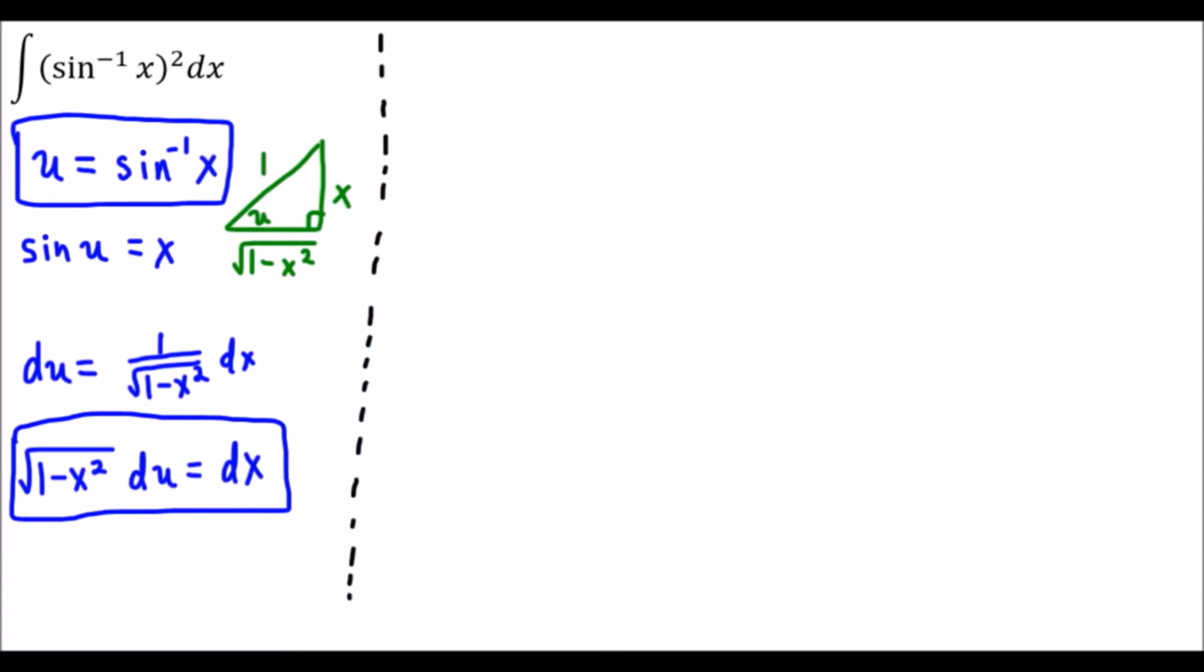We could rewrite this now as the integral of u squared and instead of dx we're going to replace dx with radical 1 minus x squared du. Now it may seem like we didn't accomplish anything here because our integral is still in terms of x. But we could get rid of x squared if we look at this equation and square both sides.